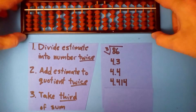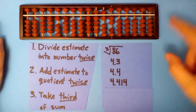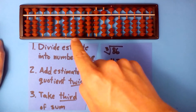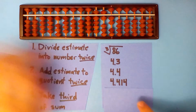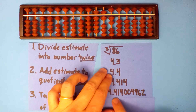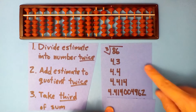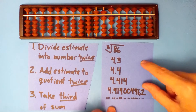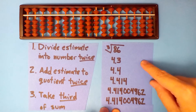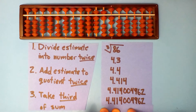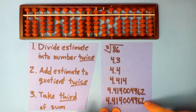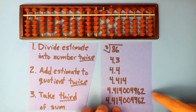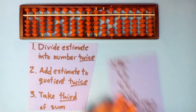Hopefully you got 4.414004962 — that's our third estimate. Now let's see what the real answer is. It's actually 4.414004962. Look at that, our answer is perfect! That won't always happen, but it might. Sometimes we got lucky. Let's do another example.